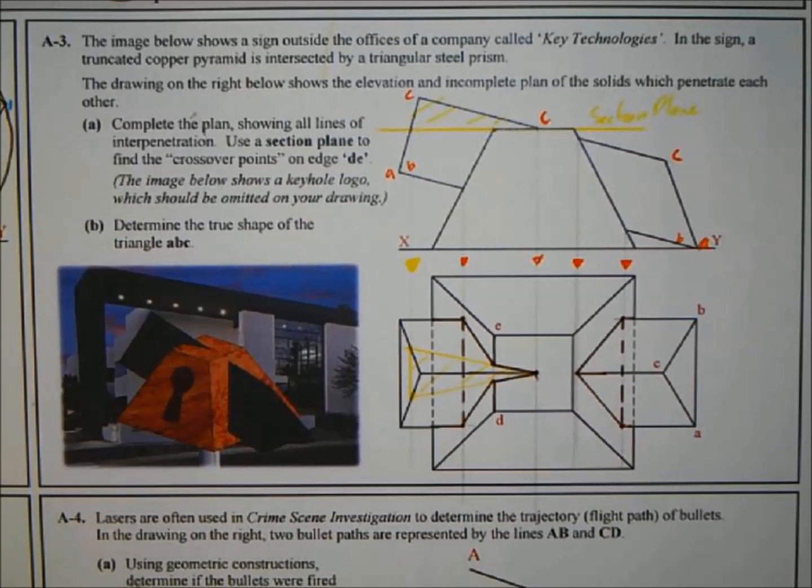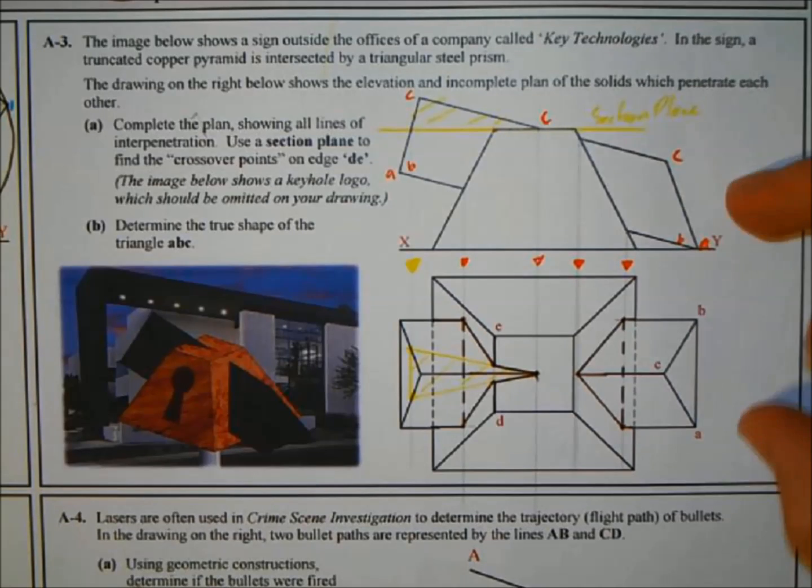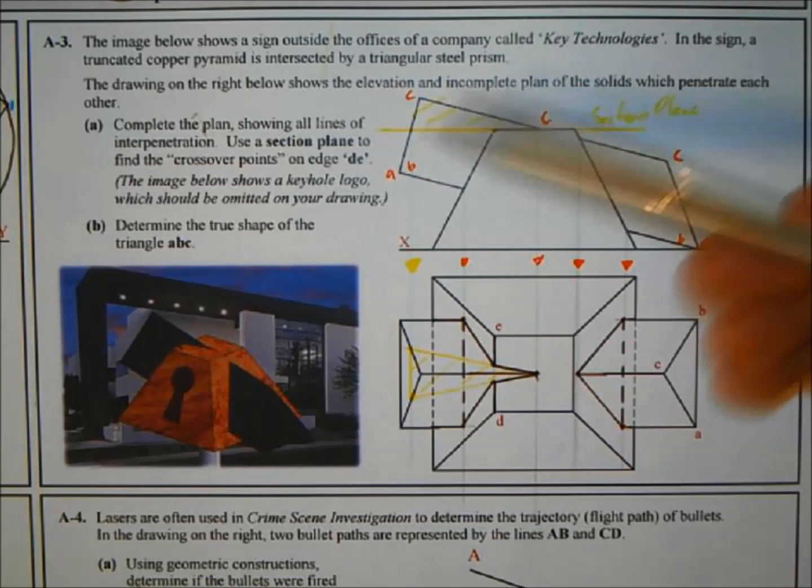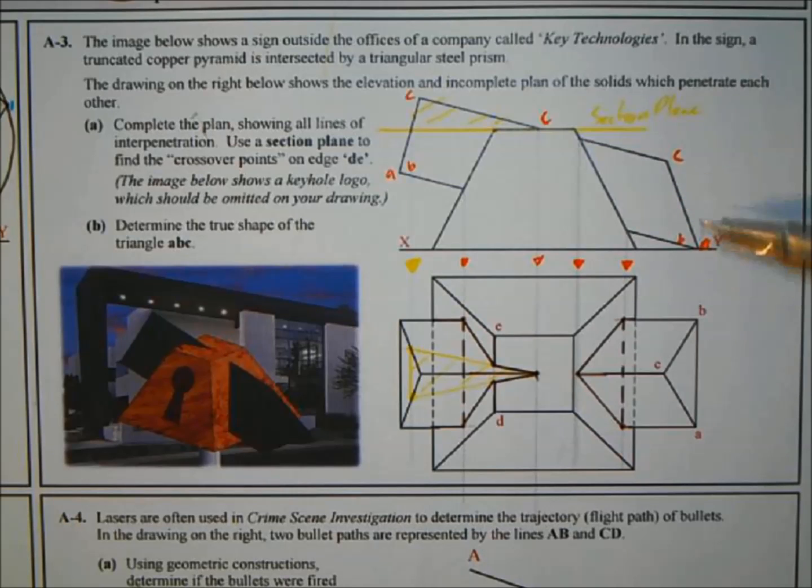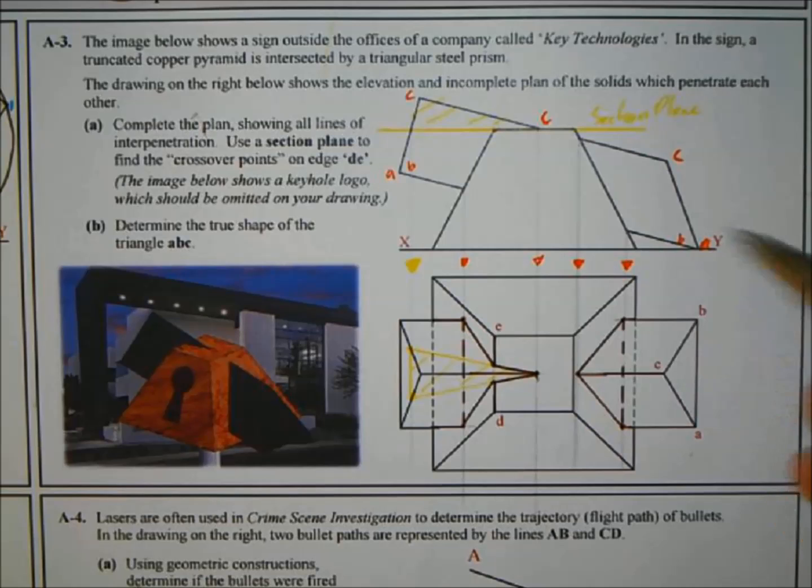Part B: determine the true shape of triangle ABC. For true shape, first thing you need to find is the true length. Surface ABC, the triangle ABC, you need an edge view of it to find a true height. We have two of them, left hand side and right hand side, but because we have the room here I'm going to use the right hand side. The height from A to C, that height from the AB line up to C is a true height because it is a point view of the line AB.